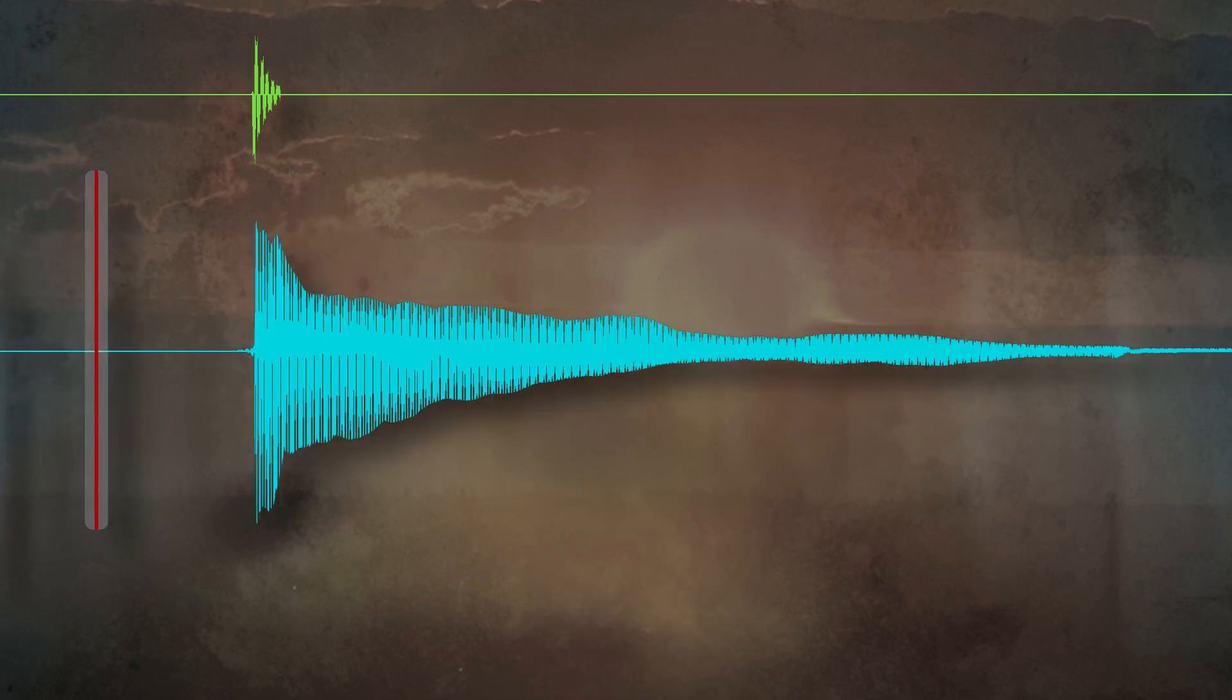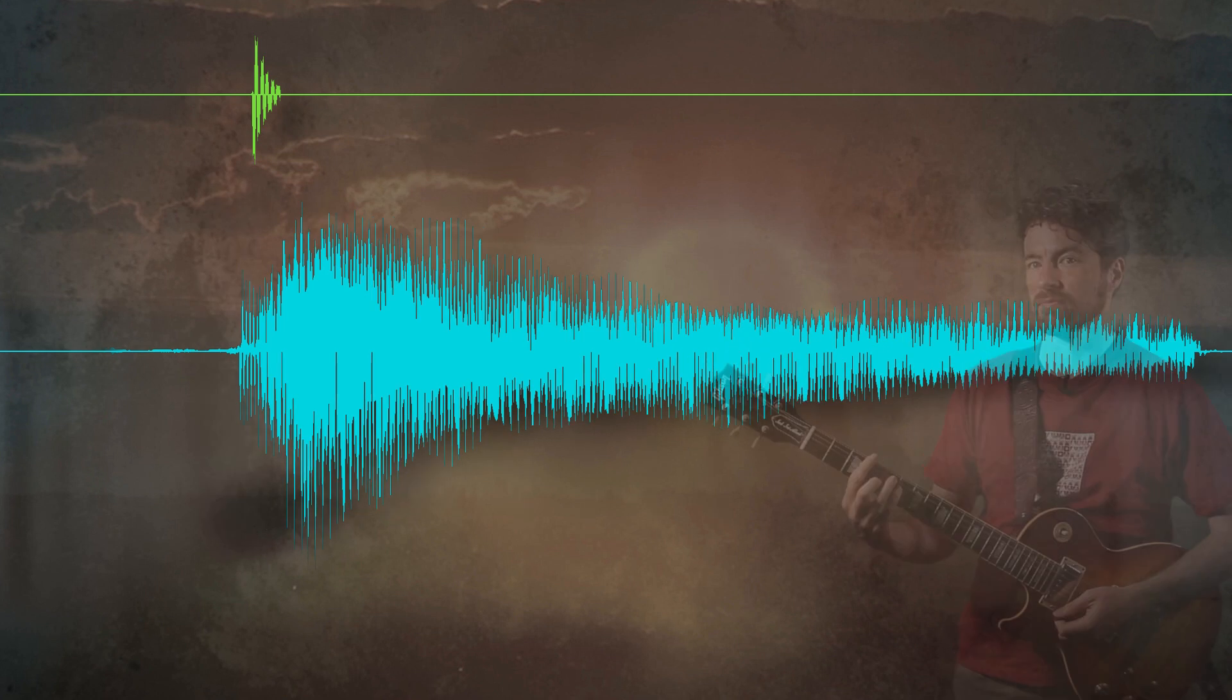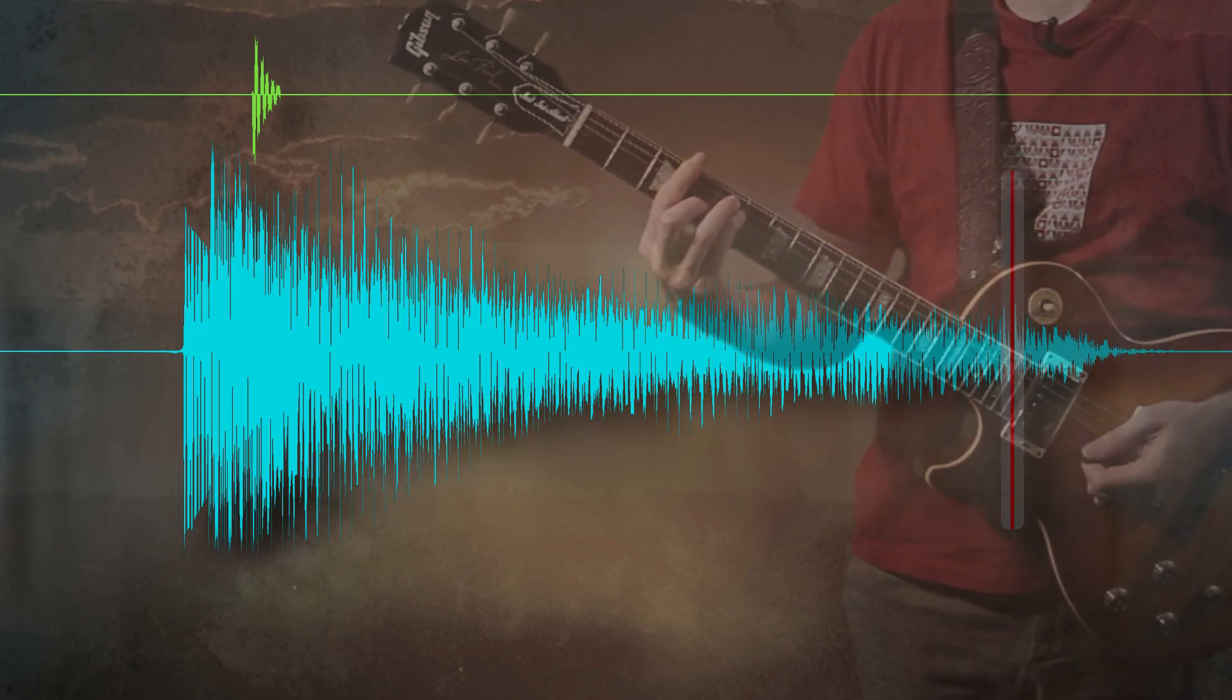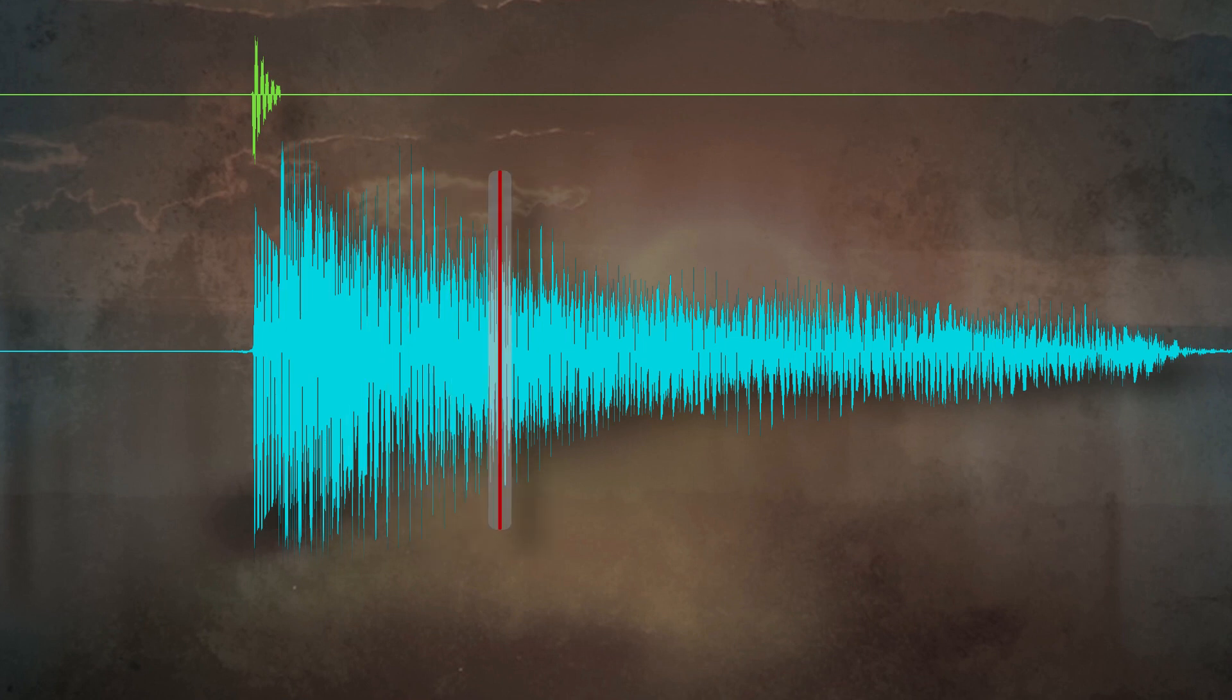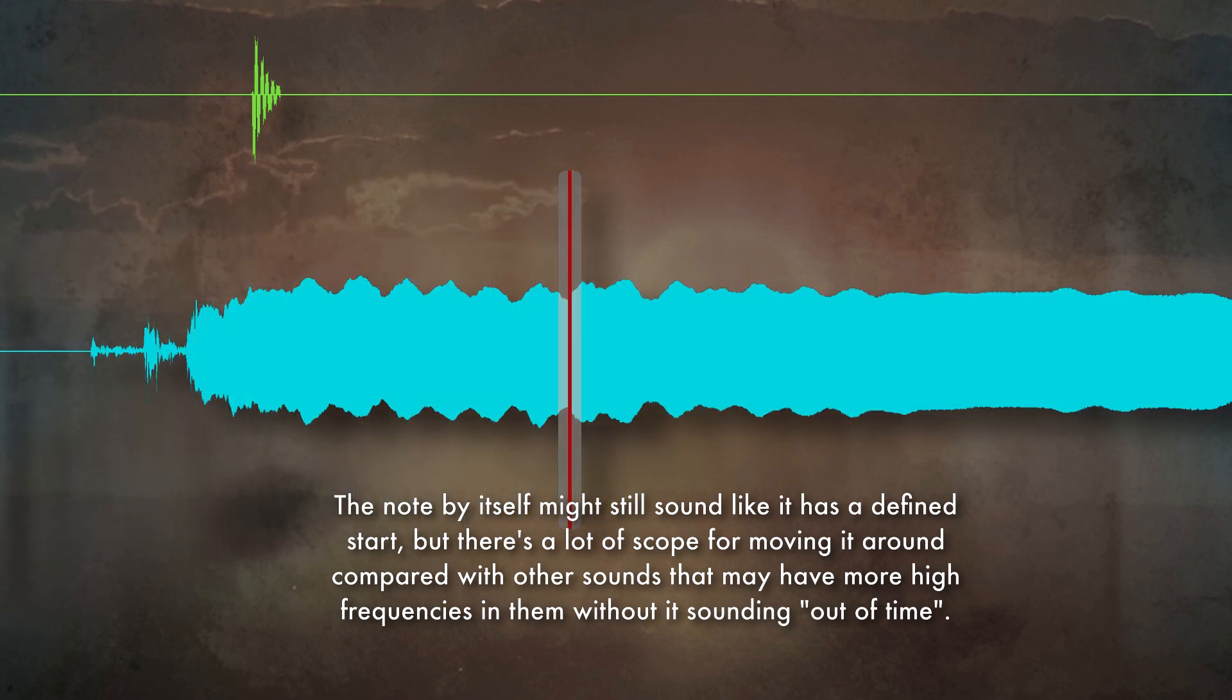A single note from an instrument like a guitar might have quite a defined and obvious place where that note starts. But if you play a chord like this, it might sound like it happened when the last note in that chord was played. Or if you play a chord like this, it might sound like it was where the first note was played. We're often relying a lot on the high-frequency content in a note to work out when it happens. So if you add EQ that reduces the high frequencies, you'll change when you hear that note. If you add compression or distortion that changes the attack of the note, you'll change when you hear it.